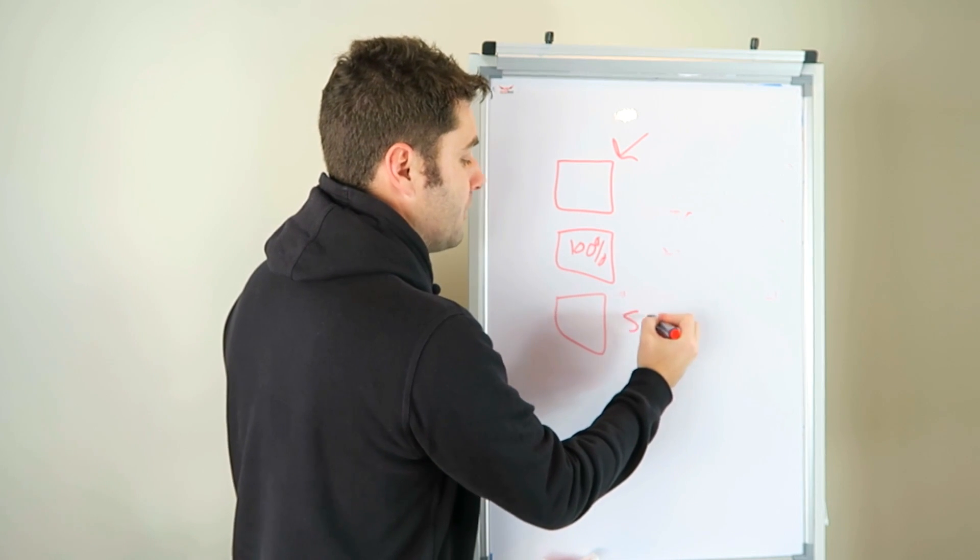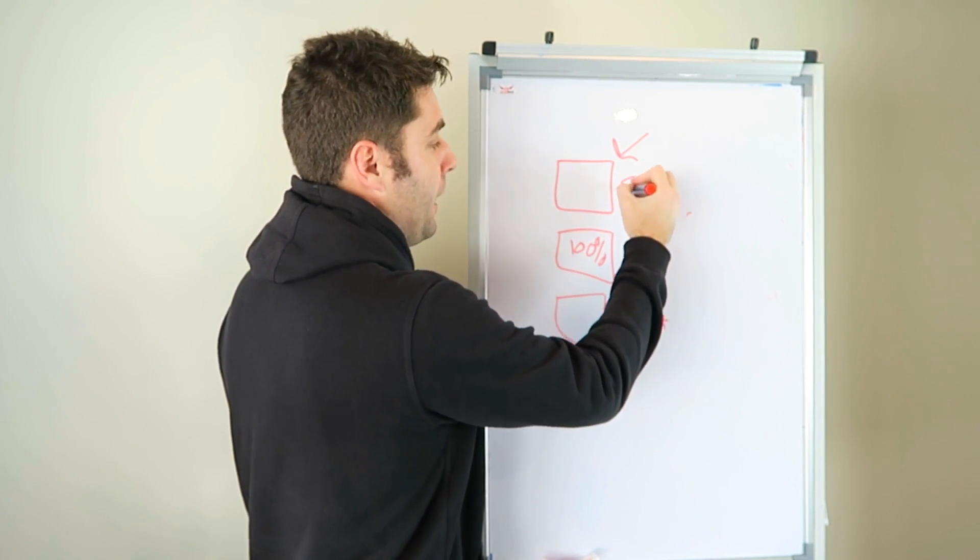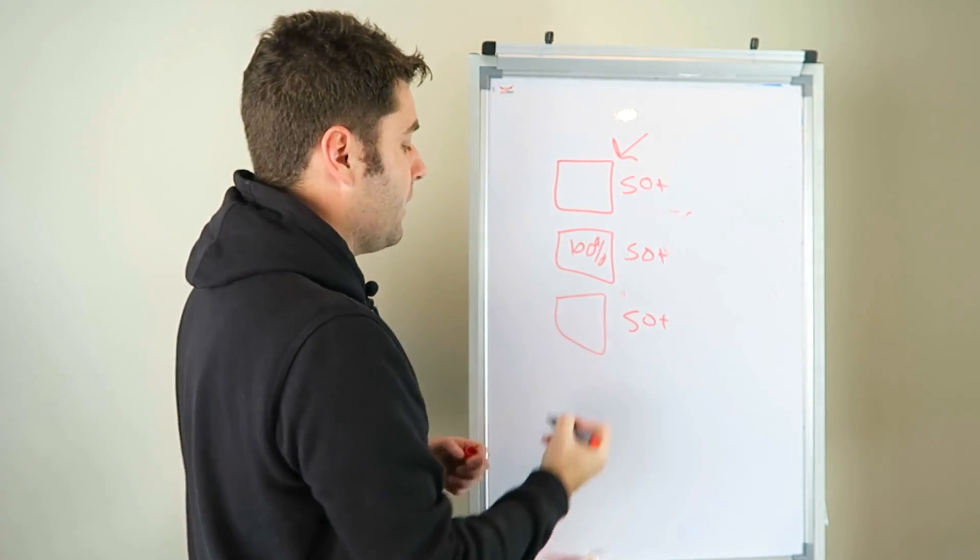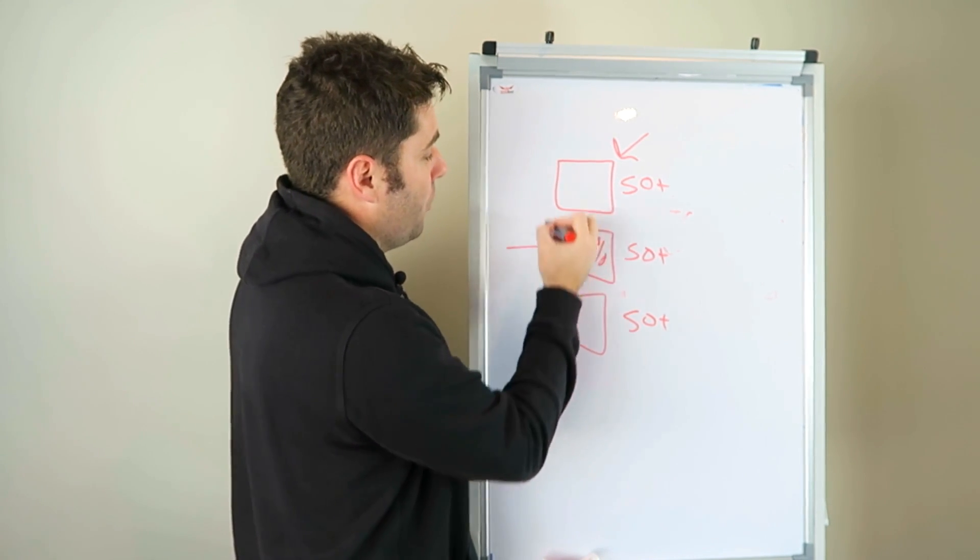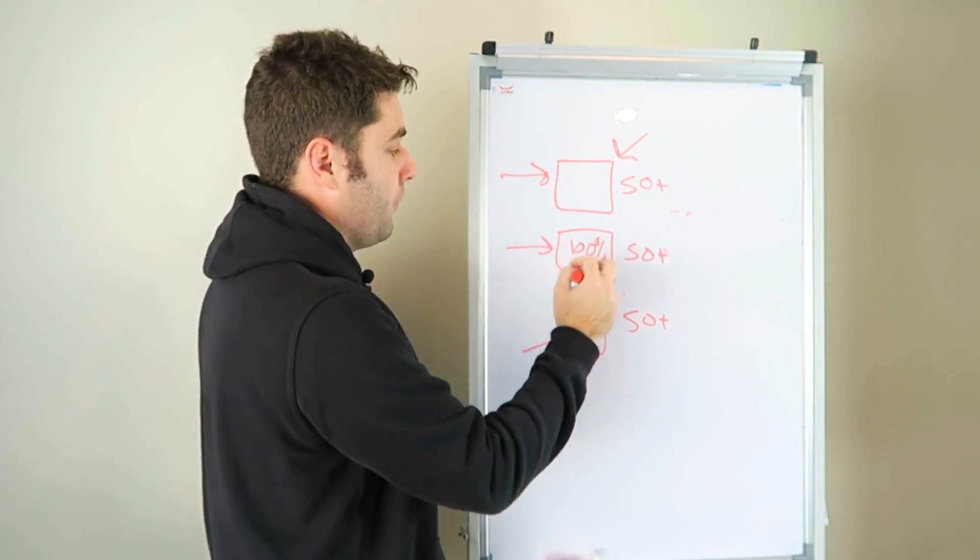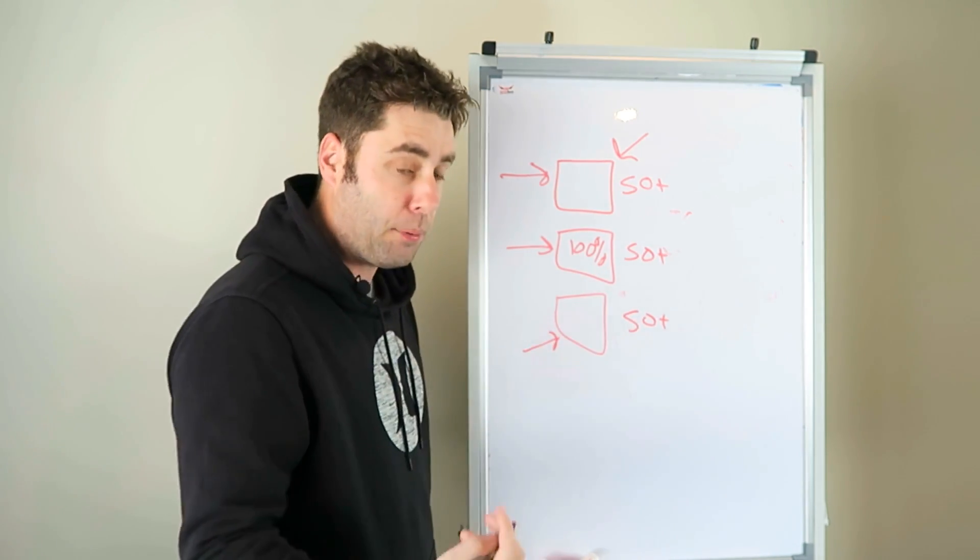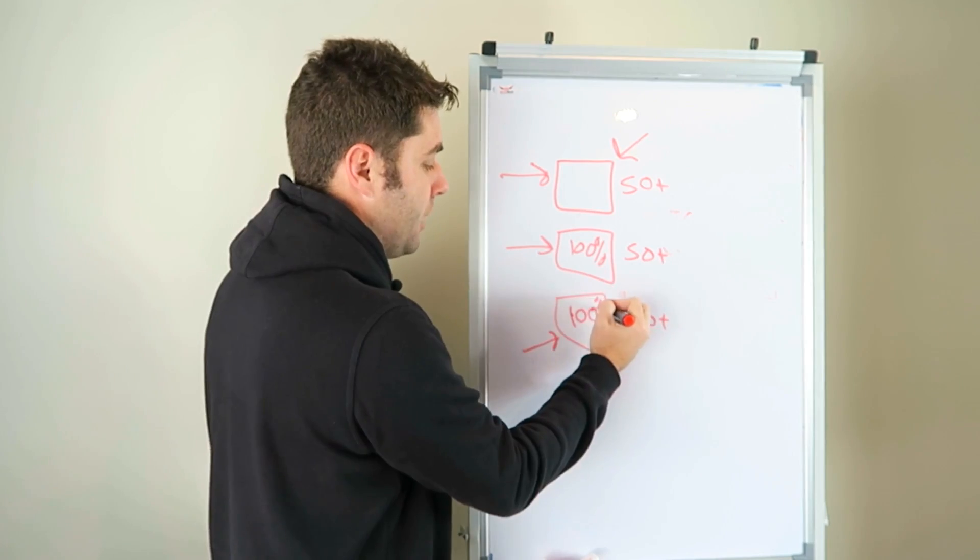So instead of me getting into the bullshit arguments, I just go out and test. And it's pretty simple, clear cut that ad sets is optimized optimization level. And that's it. Okay. So it's 50 plus guys per ad set. It's not per campaign or anything like that. Okay. It's 50 plus per individual ad set. And just remember all your optimization happens at the ad set.